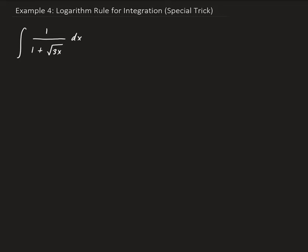In this example, we want to find the integral of 1 over 1 plus the square root of 3x. We're going to let u be equal to the denominator of this function, which is 1 plus the square root of 3x.